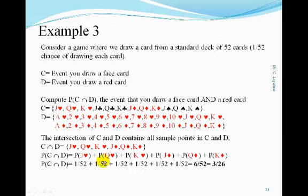Each of these sample points have a 1 over 52 probability of being selected. Therefore, the probability of the intersection of events C and D equals 6 over 52, or 3 over 26.